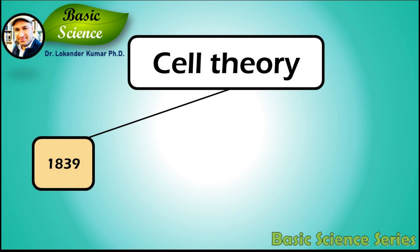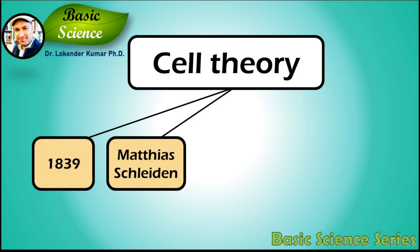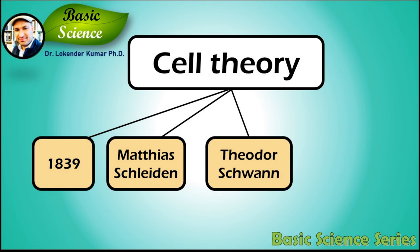Cell theory was formulated in 1839. Cell theory is credited to Matthias Schleiden and Theodore Schwann. However, many other scientists like Rudolf Virchow contributed to the theory.